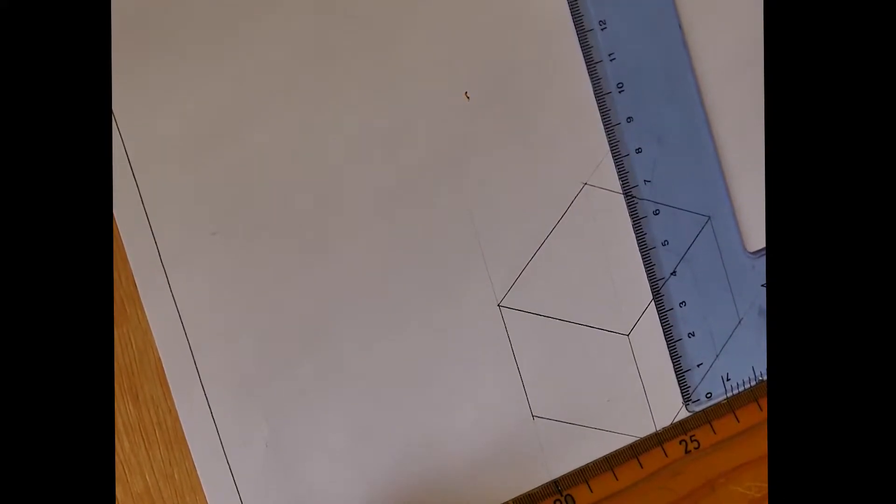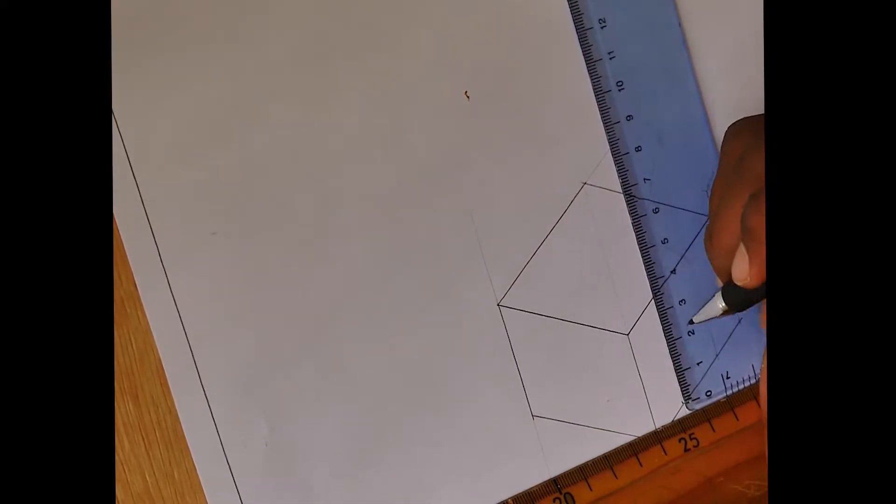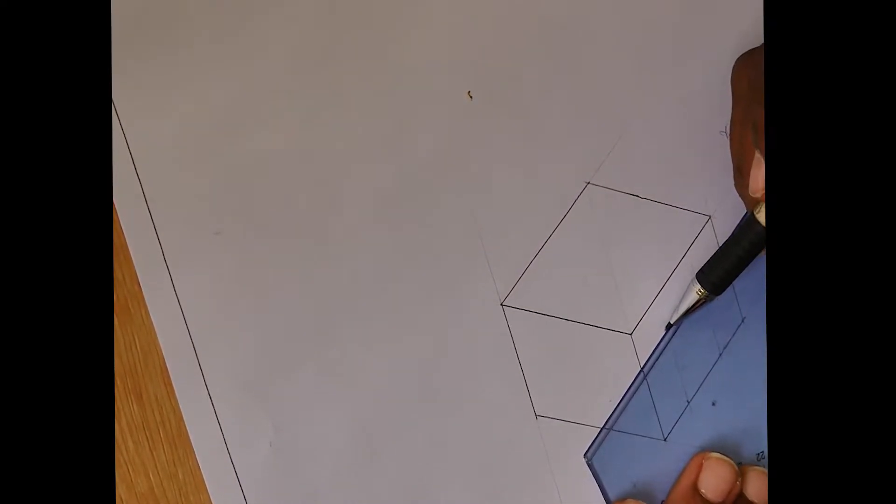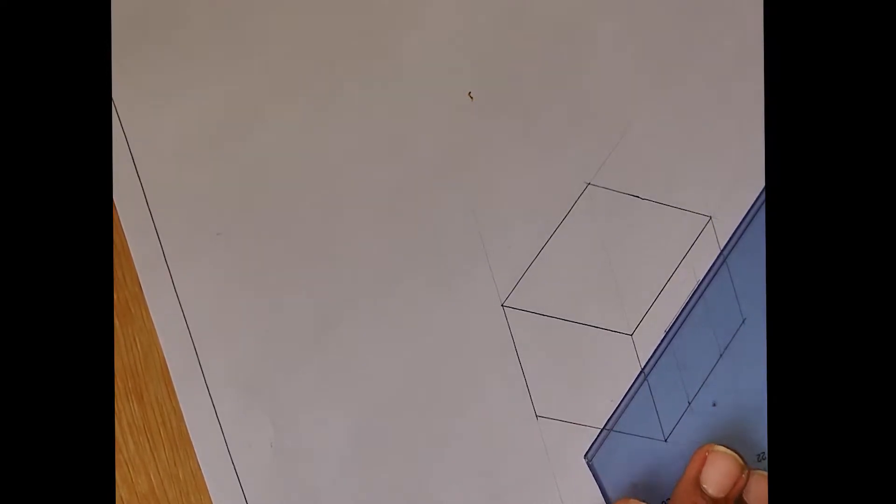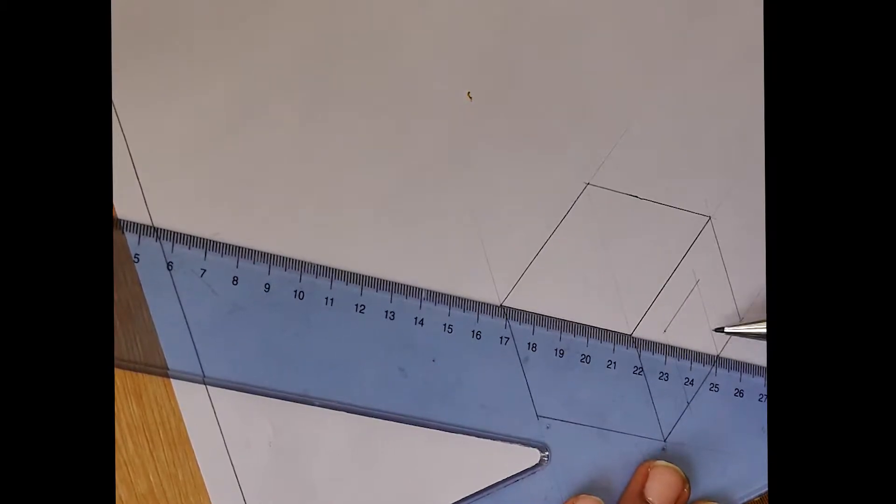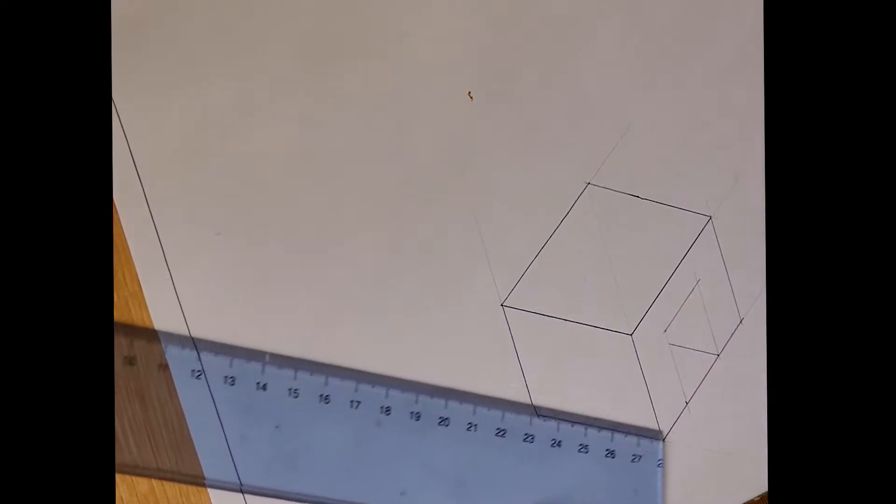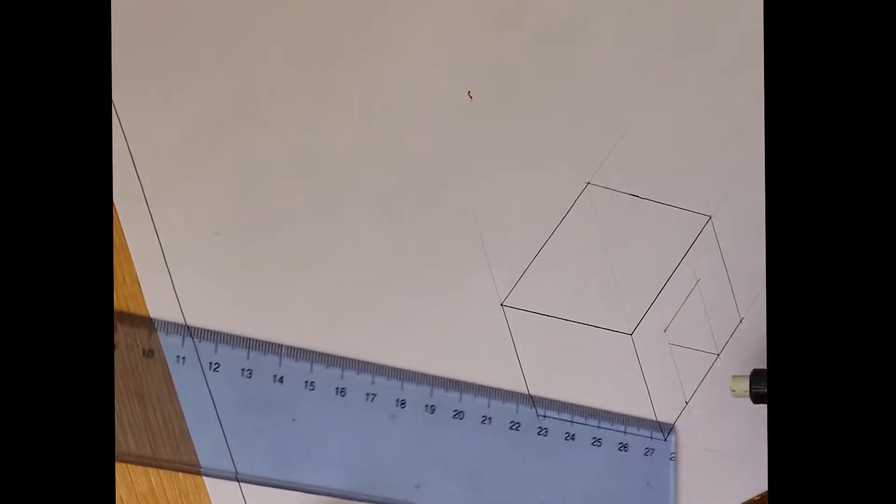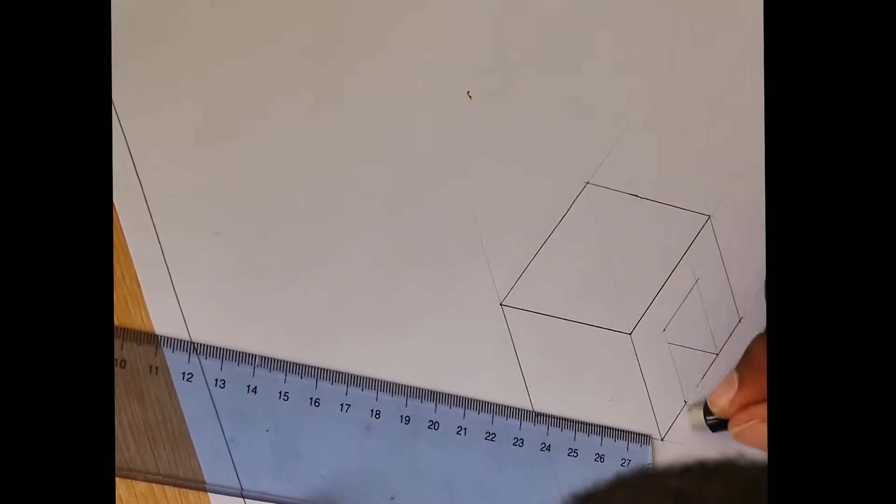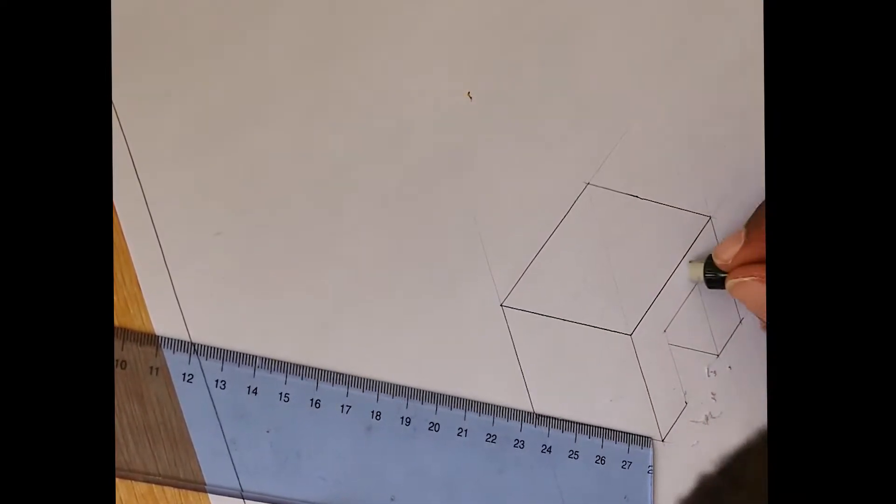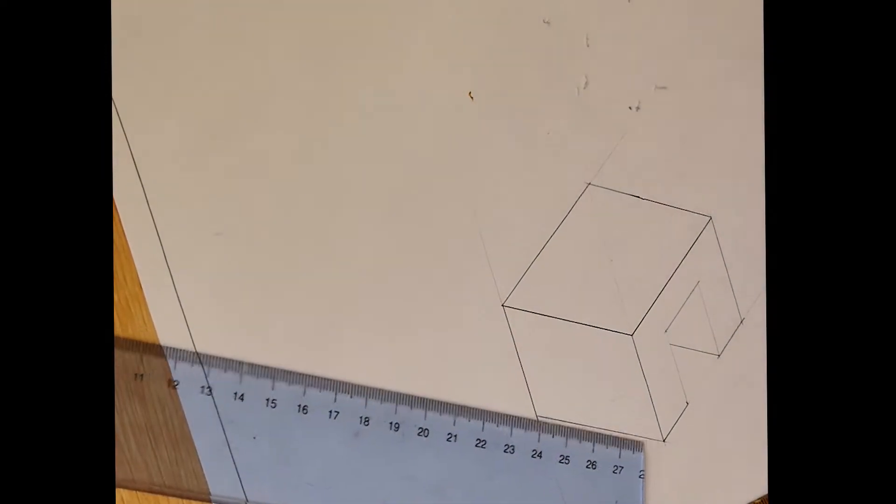Then we come here at 24. And we put in this back line to show the three-dimensional aspect of it. So far we have completed our rectangle. It looks good. It's nice and clean.